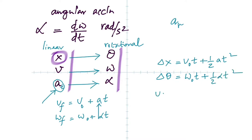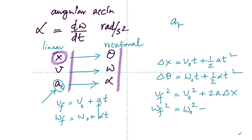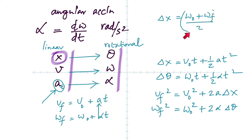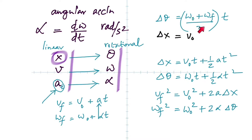Hope you make that connection. There is also: v_f squared equals v-naught squared plus 2a·delta-x. The corresponding rotational equation is: omega-final squared equals omega-initial squared plus 2·alpha·delta-theta. And additionally: delta theta equals (omega-naught plus omega-f) divided by 2, times t.